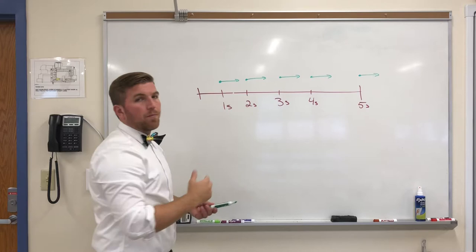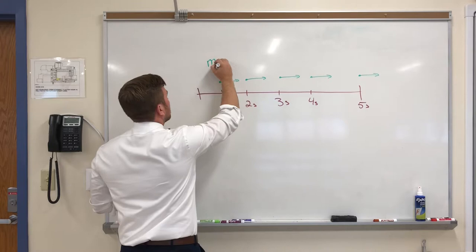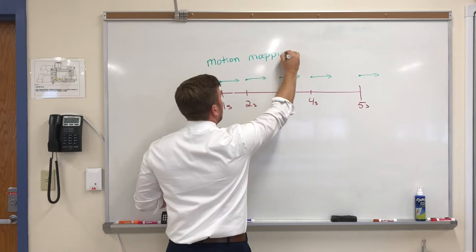As things start to accelerate, we're going to start to see these lines get larger or smaller, or change direction, depending on what's happening. So this way of showing motion is called motion mapping.